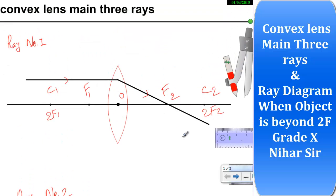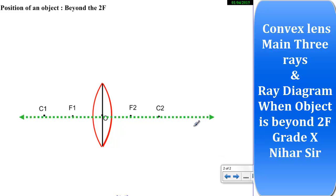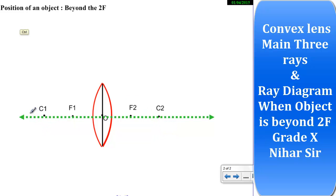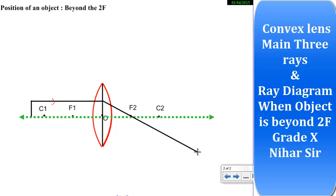Now that we understand these three main rays, with any two of them we can draw any ray diagram asked in an examination. Here the position of an object is given beyond 2F in front of the convex lens. Object is always on the left side, so 2F here refers to 2F1. I am placing the object beyond 2F1; you can keep the height 1 or 1.5 cm for a better diagram. I pass ray 1 parallel to the principal axis as the incident ray; after refraction it will pass through F2.